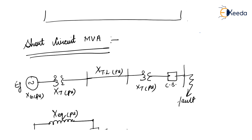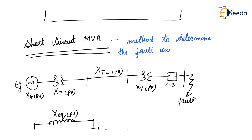Short Circuit MVA is basically a method to determine fault currents for points within a power system, and it allows for proper sizing of breakers and protection devices for these points.